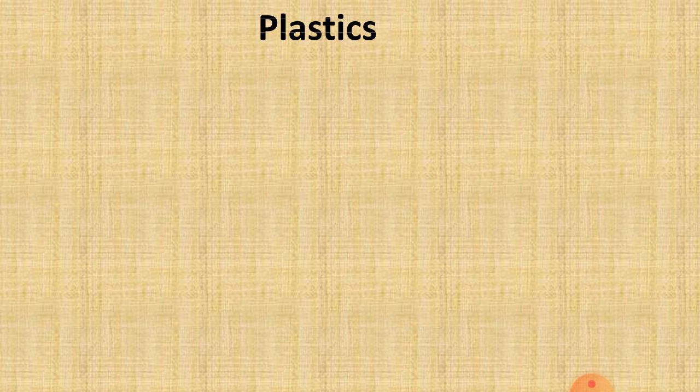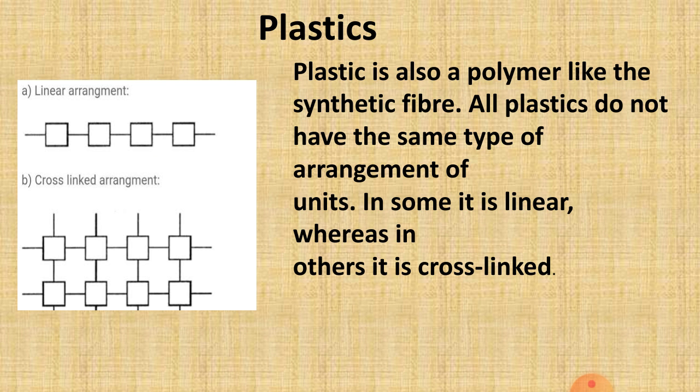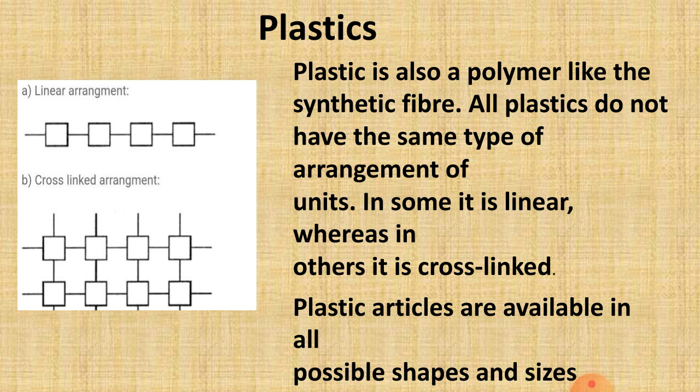In last videos we have discussed about synthetic fibers: nylon, rayon, polyester and acrylic. Now the next part of this chapter is plastic. Plastic is also a polymer like synthetic fiber. All plastics do not have the same type of arrangement of units — in some it is linear whereas in others it is cross-linked.